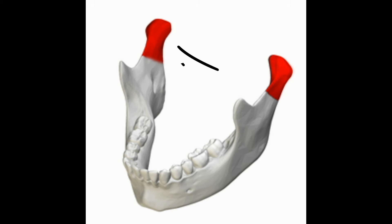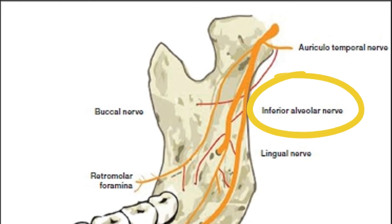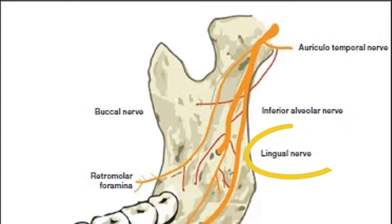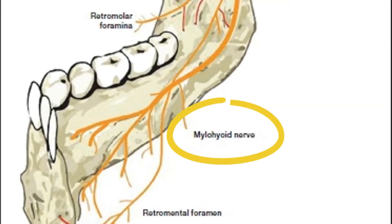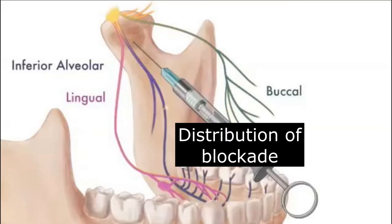Speaking about the mandibular block, you will aim for either the notch or the condylar process. The different regional branches include the auriculotemporal nerve, the inferior alveolar (as mentioned, the most common one), then the lingual, the buccal, and the mylohyoid nerve. You can also aim for the retromolar foramen.